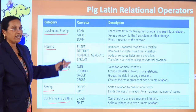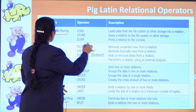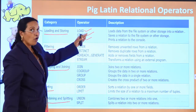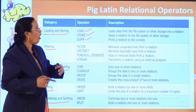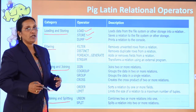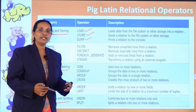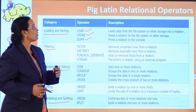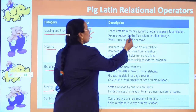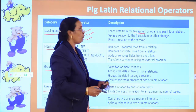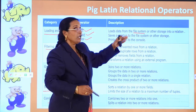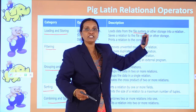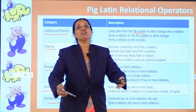Under the loading and storing category, the operators are LOAD, STORE, and DUMP. LOAD loads the data from the file system or other storage location into a relation. In local mode, data is taken from the local file system; in Hadoop or MapReduce mode, data is accessed from HDFS. Once it gets the data, it will be in the form of a relation.